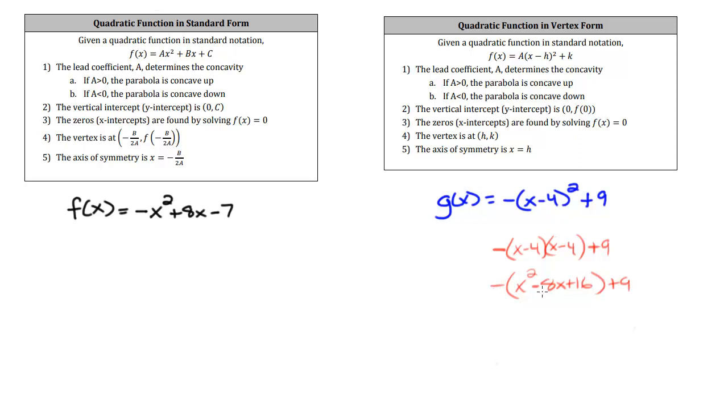Then I distribute this negative through to get negative x squared plus 8x minus 16 plus 9. Final step is just to combine the negative 16 and the positive 9 here to get negative x squared plus 8x minus 7. So as you can see, that's exactly the same as the function on the left.